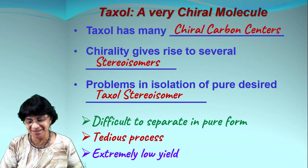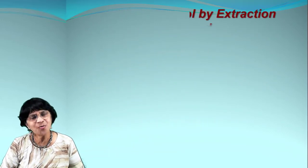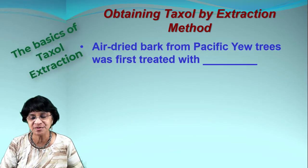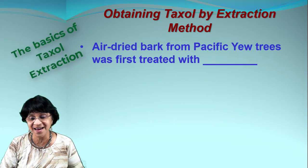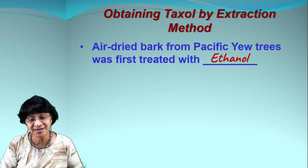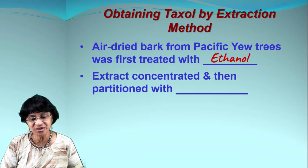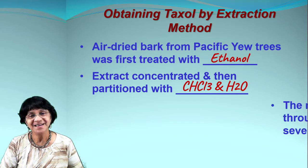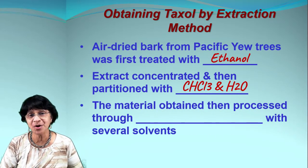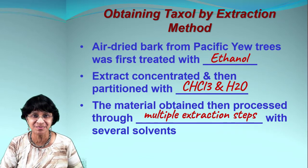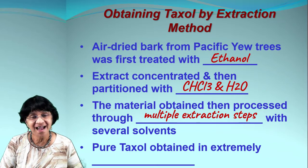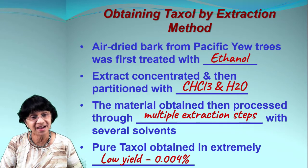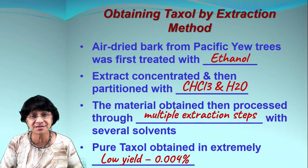Here are the basic steps for extraction: bark is taken from the Pacific yew tree, air dried, and first treated with ethanol as a solvent. The extract is concentrated and then partitioned with chloroform and water. Extracts are checked for anti-cancer activity, the process is repeated multiple times, and the active extracts are combined to obtain pure taxol.